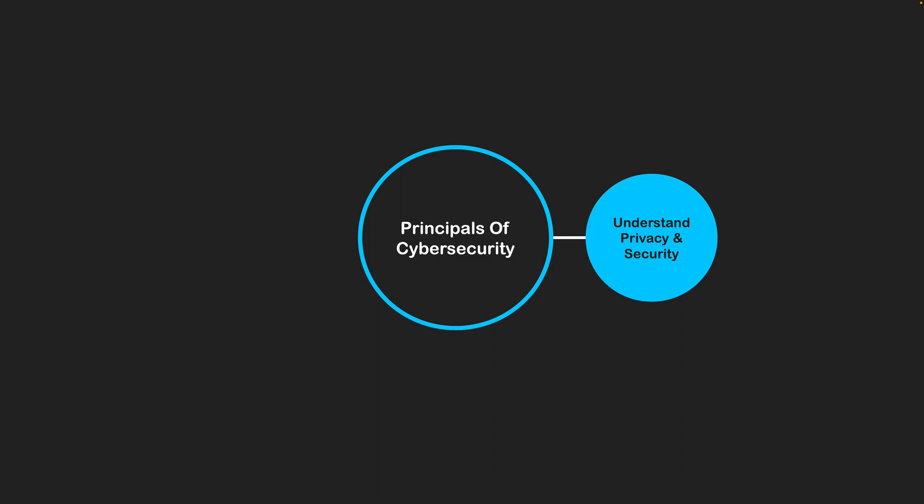The first area is understanding privacy and security. Privacy means that information about people is private — it is their information. They've voluntarily given it up to a system, but they don't want everyone seeing it, and there are laws in place that support that. The security side refers to the measures we put in place to protect that privacy — things such as passwords, biometrics, and two-factor authentication — all put in place to keep data private on online systems.